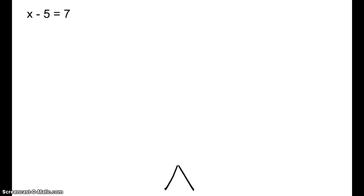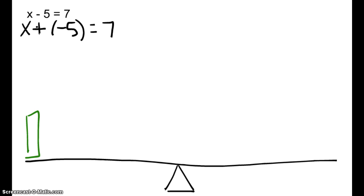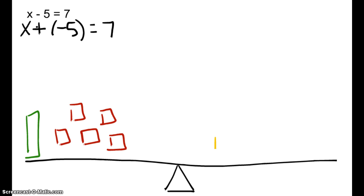Let's take a look at this one. We have x minus 5 equals 7. Now let's think about what this really means. x minus 5 is the same thing as x plus 5 negatives equals 7. So on the left, we have x and we have 5 negatives, and then on the right we have 7 positives.